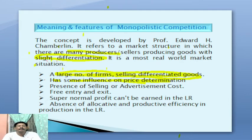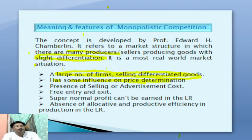There is also free entry and exit. As in perfect competition, in a monopolistic competition market new rival firms may enter the market without any significant barriers, as barriers are very low. Because of low cost of production, new firms may enter the market without restrictions.